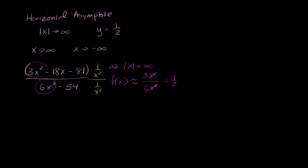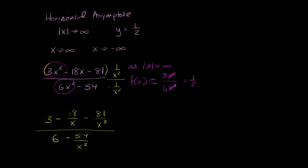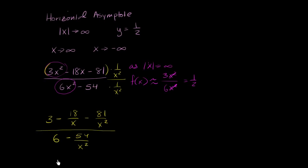In the numerator, 3x squared divided by x squared is 3, minus 18 over x, minus 81 over x squared. The denominator becomes 6, minus 54 over x squared. As x approaches infinity, the terms 18/x, 81/x², and 54/x² all approach 0, so you approach 3/6, or 1/2.